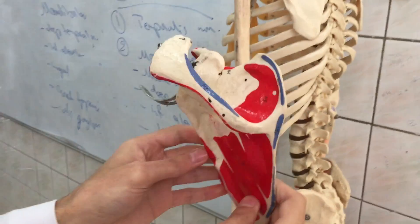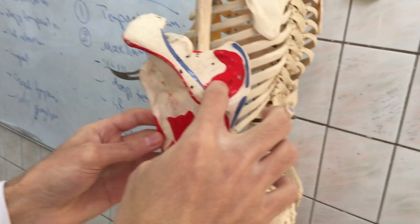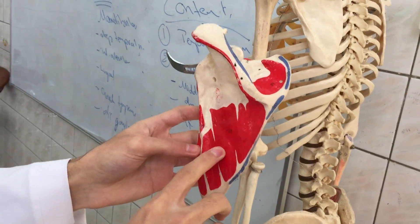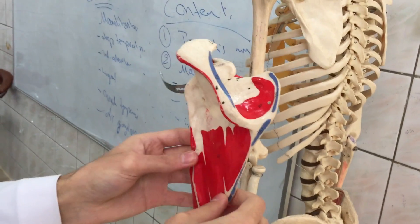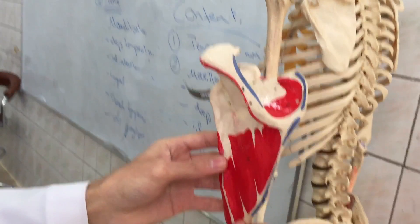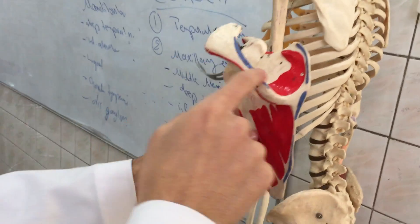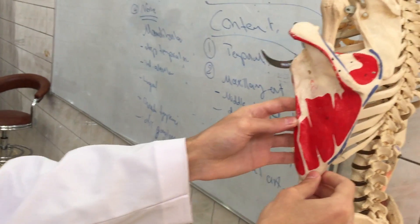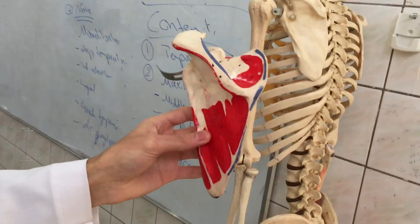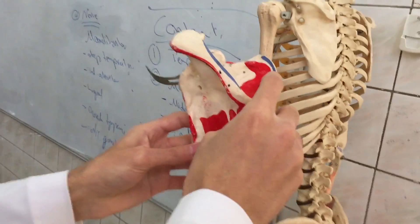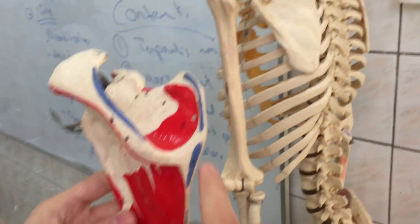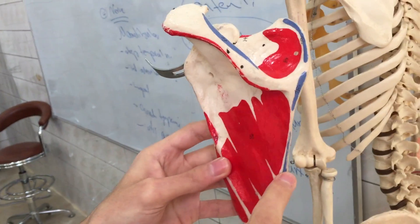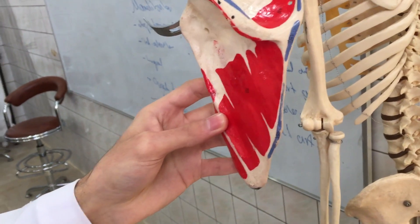On the posterior surface, this is the origin of the supraspinatus muscle, and this is the origin of the infraspinatus muscle. This is the origin of the deltoid muscle, and this is the insertion of the trapezius muscle. This is the insertion of the levator scapulae muscle, and this is the insertion of the rhomboid minor muscle, and this is the insertion of the rhomboid major muscle.